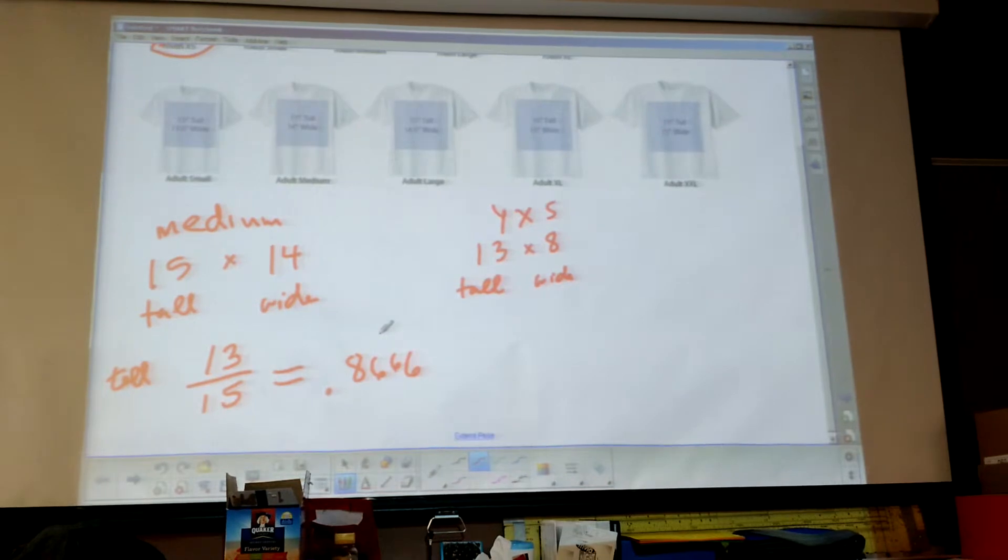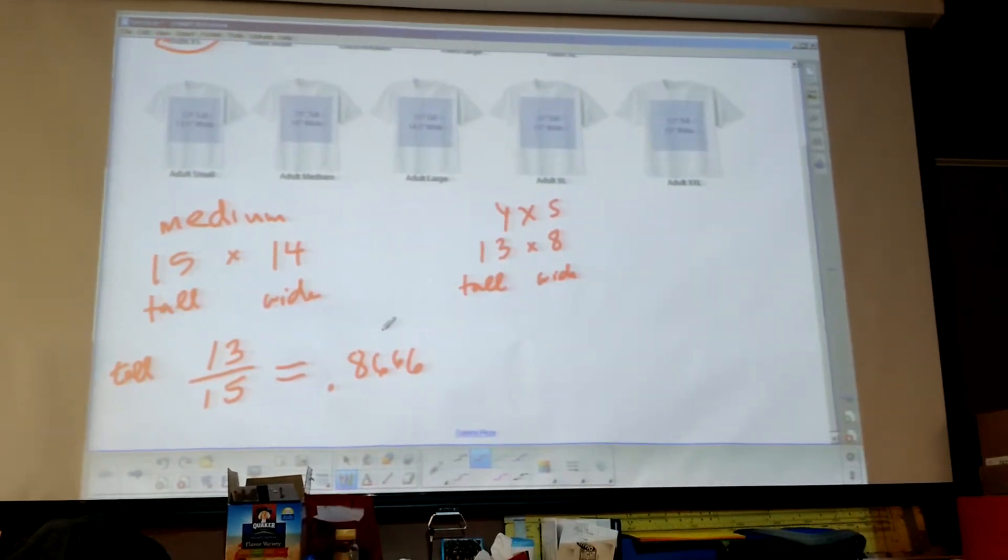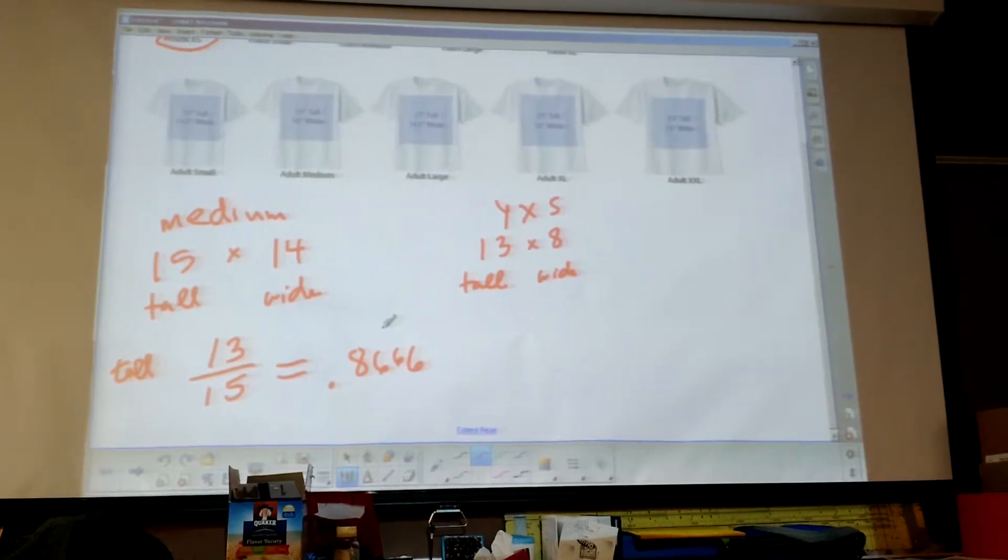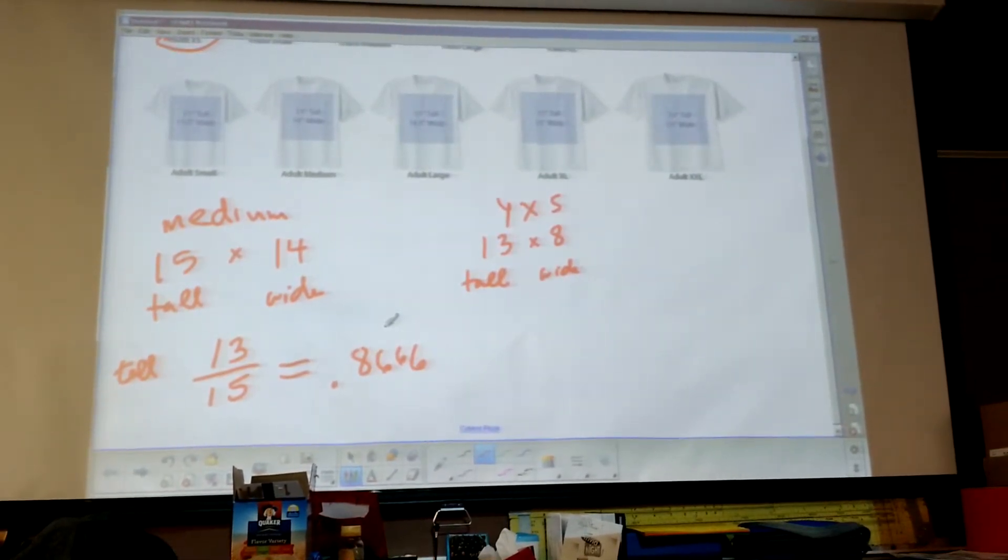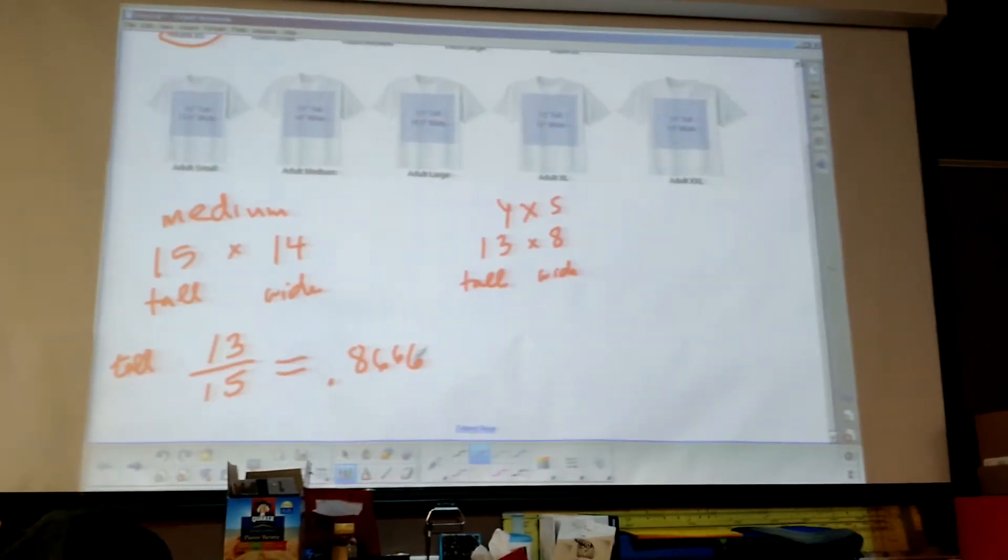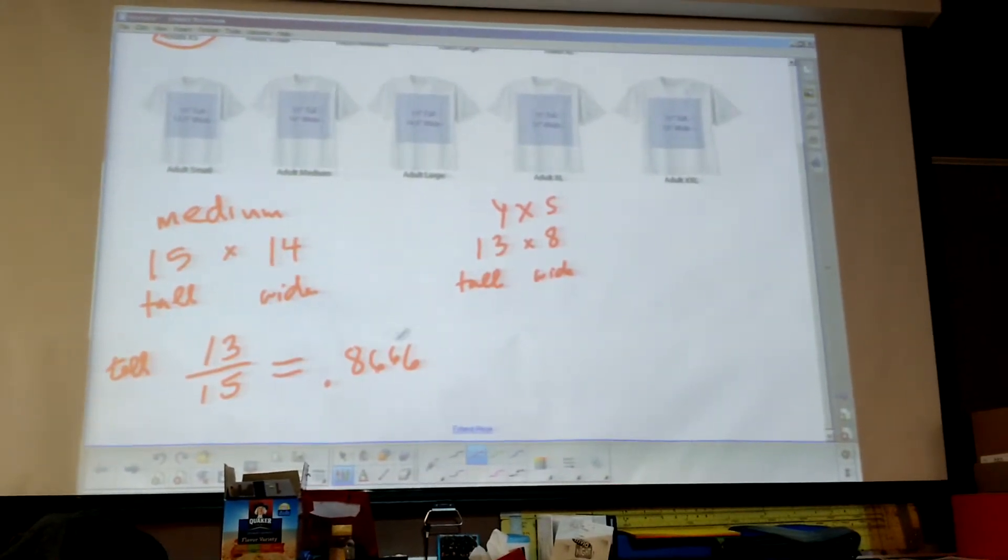What you're going to do is take that number. Tall is x or y? Tall would be up and down, that would be the y's. So you're going to take all of your y points and you multiply it by that number right there in your spreadsheet.